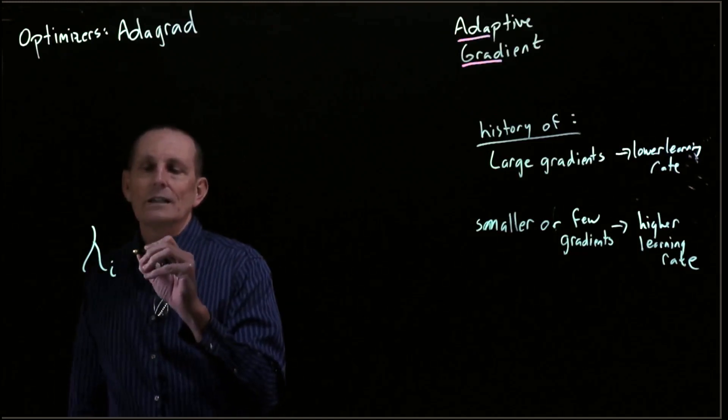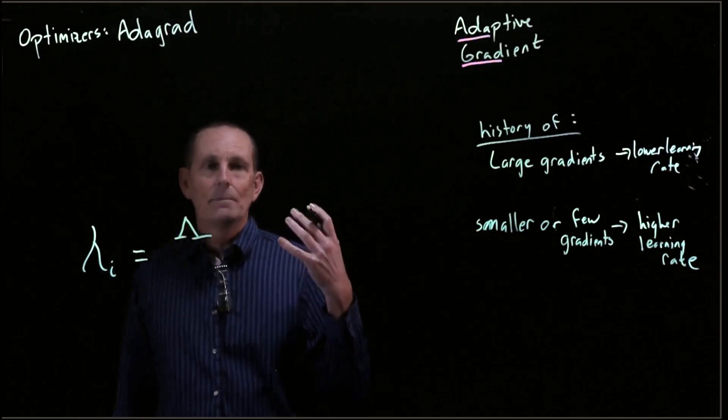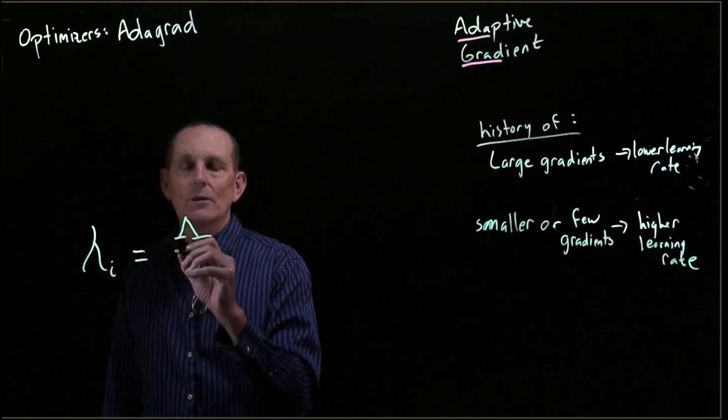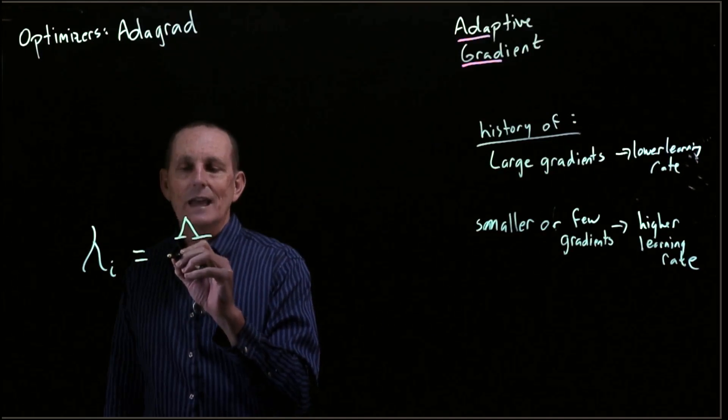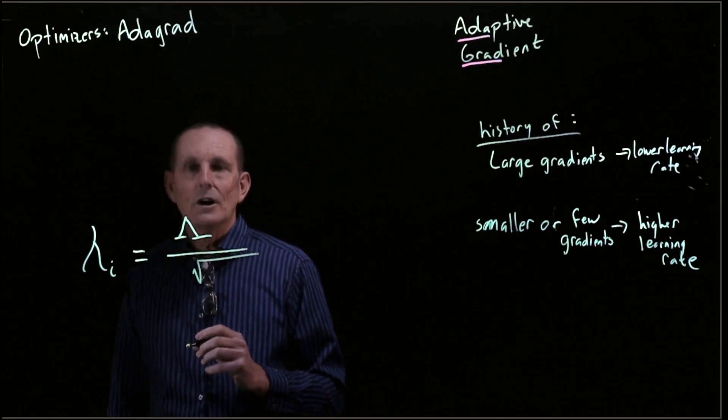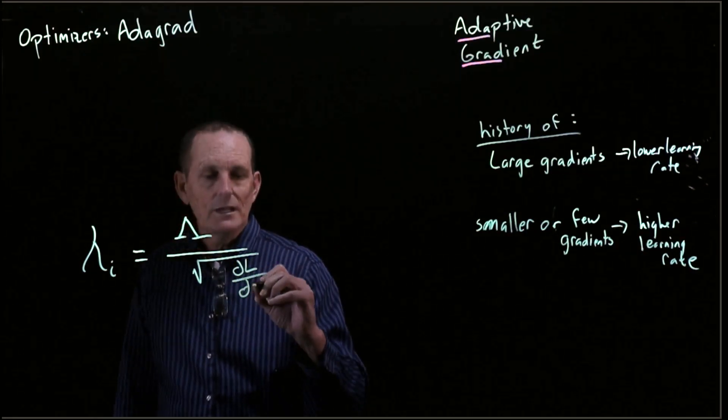So we're going to define this as some capital lambda, which is some hyperparameter still. And we are going to divide that by the square root of the sum of the gradients.